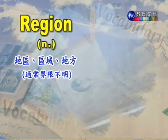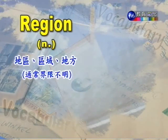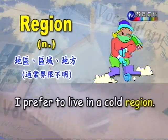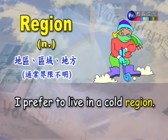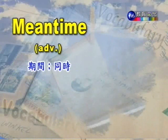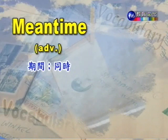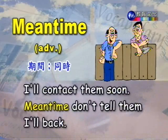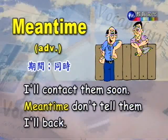Region，名词，地区、区域、地方，通常指界线不是非常清楚的一块区域。例句：I prefer to live in a cold region. 我比较喜欢住在比较寒冷的地区。Meantime，副词，期间、同时。例句：I will contact them soon. Meantime, don't tell them that we're back. 我会尽快和他们联络，在这期间请你不要告诉他们我回来了。